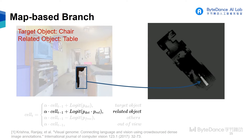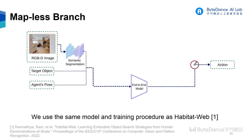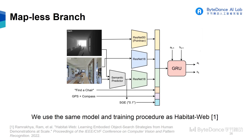If a related object is detected, we update the logit according to the confidence score and the relation probability. The relation probability is obtained from the Visual Genome dataset. In the end-to-end branch, we hope the robot can achieve efficient exploration like humans, so we use the same model and training procedure as Habitat-Web.